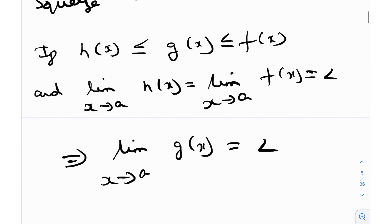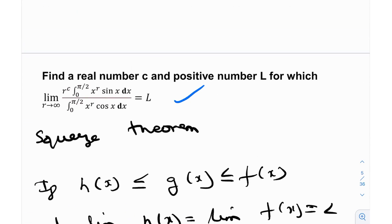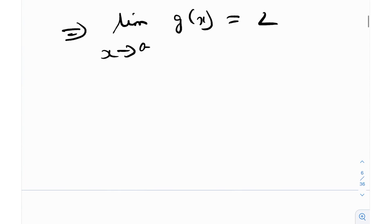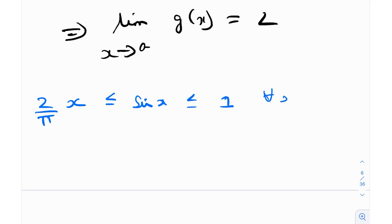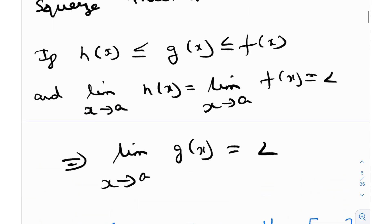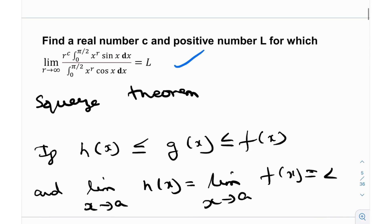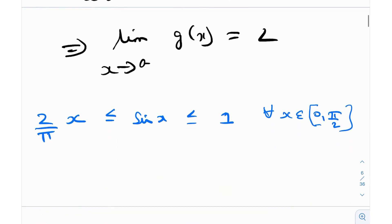The first thing when I see this problem is it reminds me of this inequality: we know that sin x is less than or equal to 1, but it's also greater than or equal to the linear function (2/π)·x. This can be easily proved to hold for all x between 0 and π/2. The reason I chose 0 to π/2 is because the limits of the integration in both the numerator and denominator are between 0 and π/2. So I think that's a good starting step.